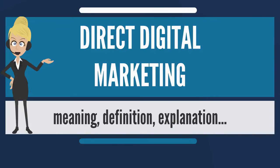Traditional marketing communications are divided into two primary types: direct marketing and mass marketing. Direct marketing is a marketing method that uses such things as a consumer's postal address to send addressable communications to a target audience.